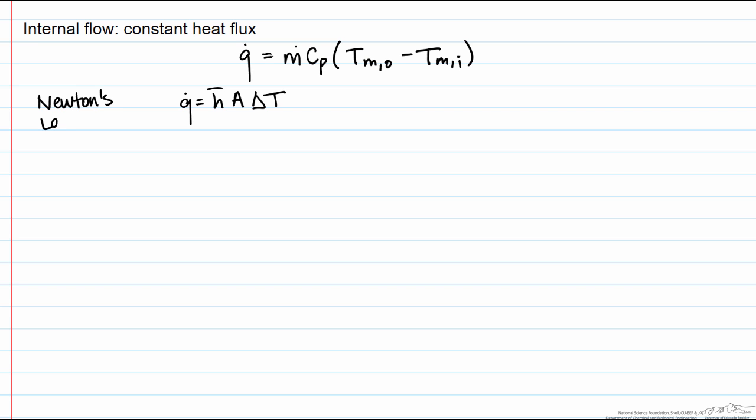So we rewrite this as Q dot equals, now because the temperatures are changing, we have local heat transfer coefficients. So this is at the outlet times the area, the surface temperature at the outlet minus this mean temperature at the outlet.